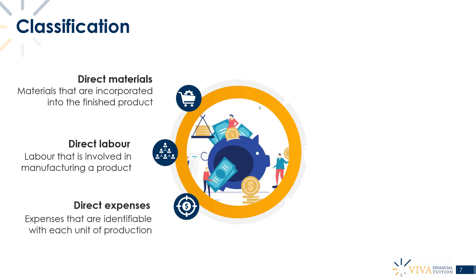The next classification is direct expenses. These are expenses incurred that are related to each unit produced. A good example is a royalty or license fee paid for each unit produced. In some industries, a company might use someone else's intellectual property — such as a patent or piece of technology invented by another person — and they may have to pay a fee each time that technology is replicated. The license fee fits under direct expenses because it's incurred each time a unit is produced.